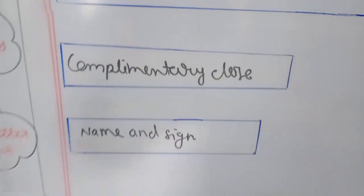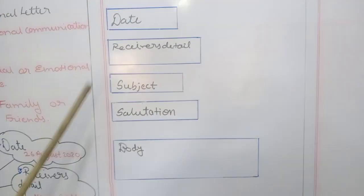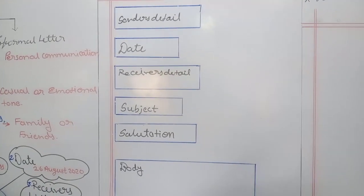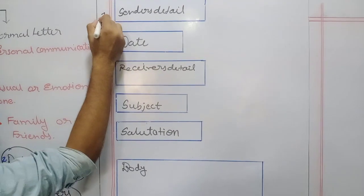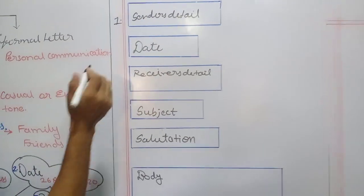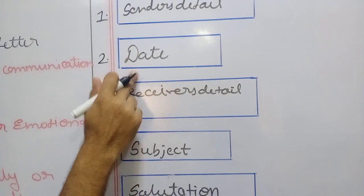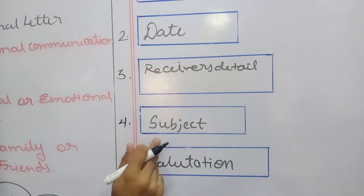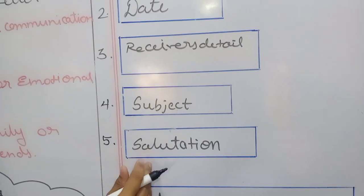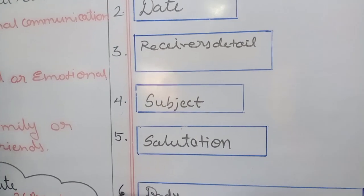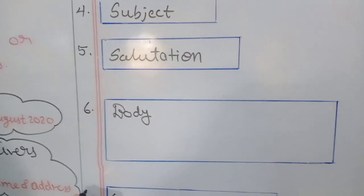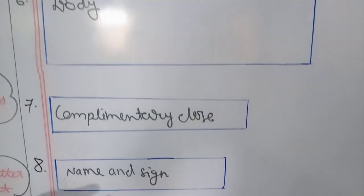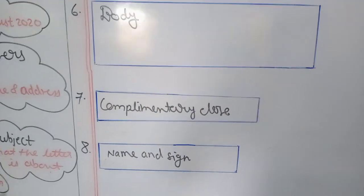This way, by using these eight steps: the first one is sender's detail, second is date, third is receiver's address, fourth is subject, fifth is salutation, sixth is body of the letter, seventh is complimentary close, and eighth is name and sign.